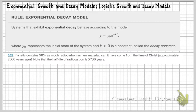Now, this problem below says, if a relic contains 90% as much radiocarbon as new material, can it have come from the time of Christ approximately 2,000 years ago? Note that the half-life of radiocarbon is 5,730 years.